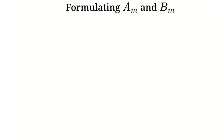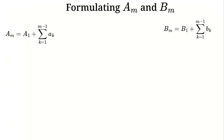Using the differences, we can write A(m) equals A(1) plus the sum of A(k) from k equals 1 to m minus 1, and B(m) equals B(1) plus the sum of B(k) from k equals 1 to m minus 1, where A(1) equals 1, B(1) equals 2, A(k) equals 2 plus k, and B(k) equals 1 plus k.